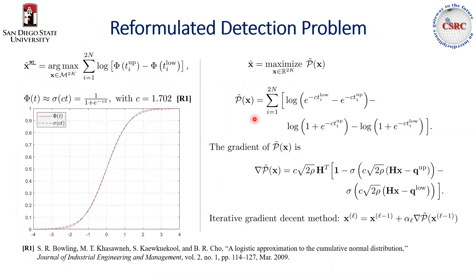Now, we will reformulate this maximum likelihood formulation in order to address the challenges. First, we exploit the fact that the objective function can be approximated by a sigmoid function. And so the objective function can be written in a closed form like this. And second, we relax the constraint on the feasible set from a discrete set to a continuous set, so that we can apply an iterative gradient descent method.